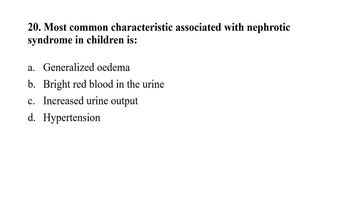Question number 20: The most common characteristic associated with nephrotic syndrome in children is — option A: generalized edema; option B: bright red blood in the urine; option C: increased urine output; option D: hypertension. The correct option is A, that is generalized edema.